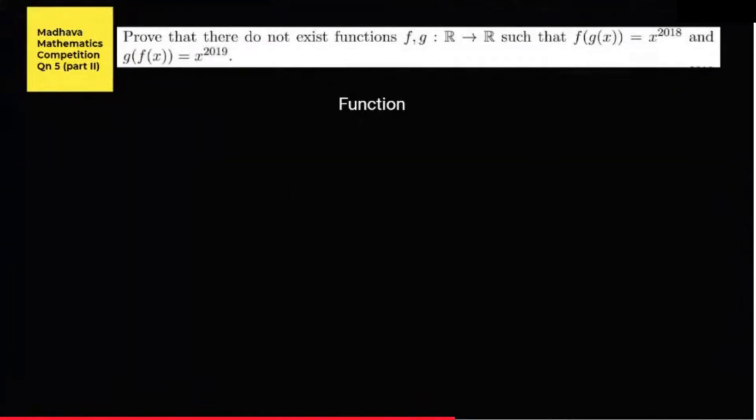Hello, today I'm going to discuss a question from a mathematics competition. The question states that we need to prove there do not exist functions f and g which map from ℝ to ℝ such that two conditions hold. We will be proving this question by contradiction.